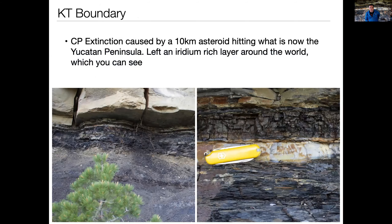The KT event — or Cretaceous-Paleogene extinction — is named after a geologic boundary that you can see in the rocks called the KT boundary. You can see it at various places around the country; this picture is from Southern Colorado, at Trinidad Lake State Park. Above the tree you can see this overhanging shelf of rock with a thin white layer — that is the KT boundary. It's not very thick, only about an inch, and you can see my pocket knife sitting there on top of it.